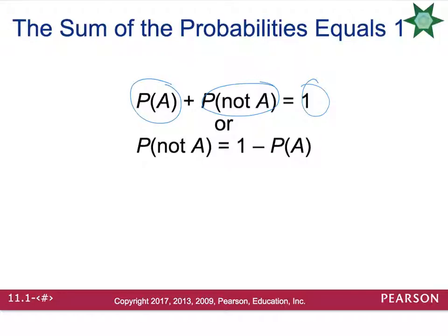Sometimes it's easier to take one minus the probability the event happens in order to find out what the chances are that the event does not happen. So these formulas can help you speed up the process when you're working with probability.